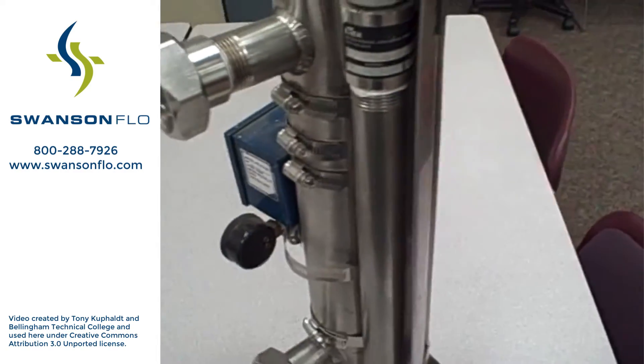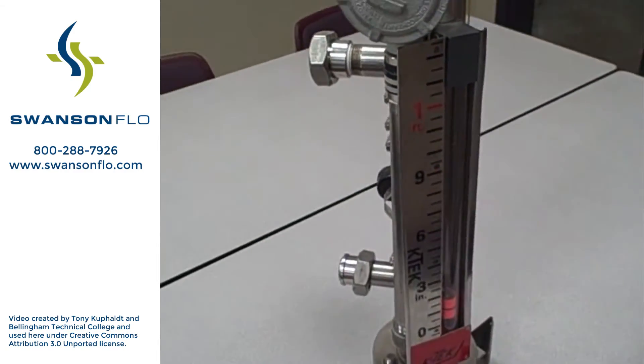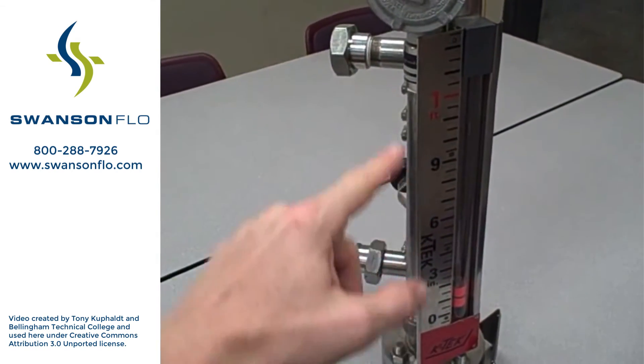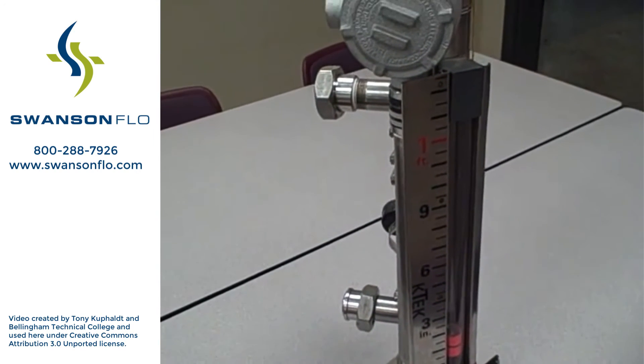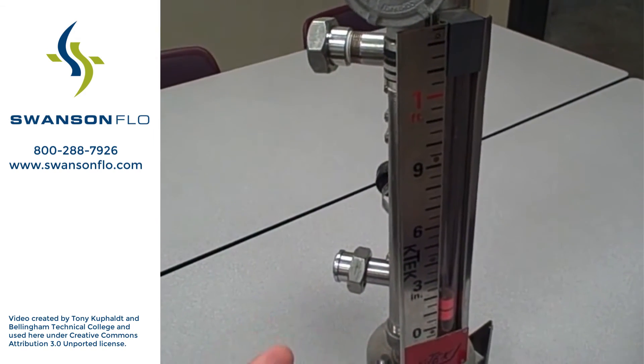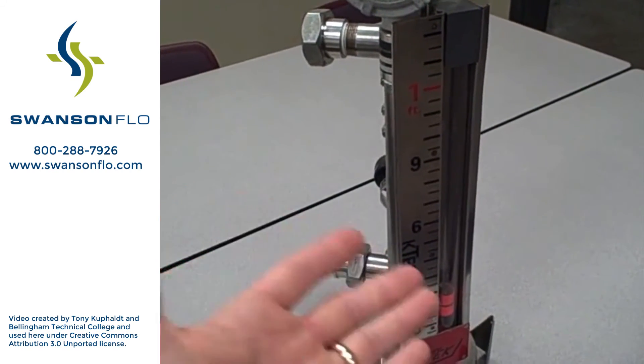In addition, you can also attach an accessory to this gauge that uses magnetostriction to determine exactly where that float is, and produce an analog output signal. That way this device can actually function as a level transmitter, in addition to being a level switch and level gauge.